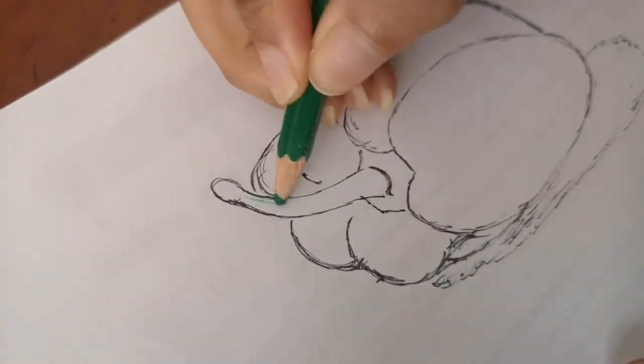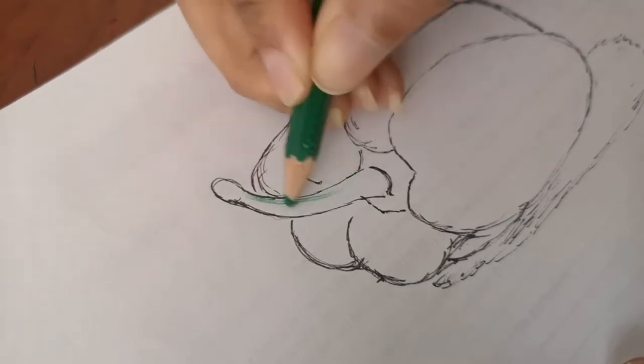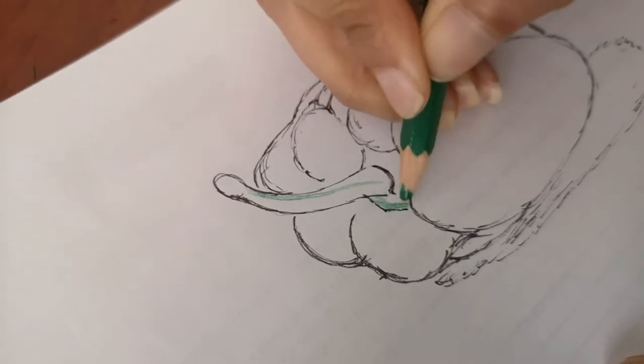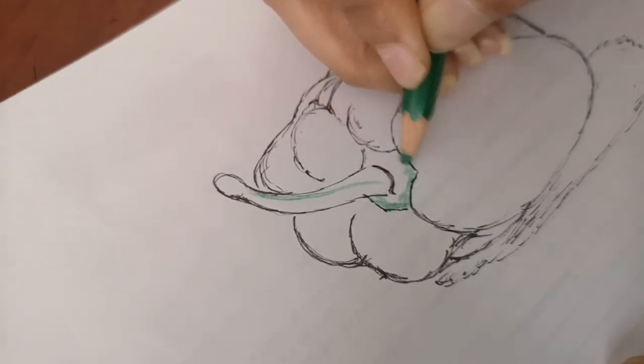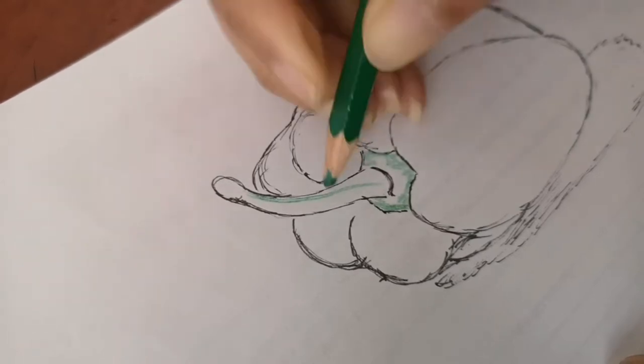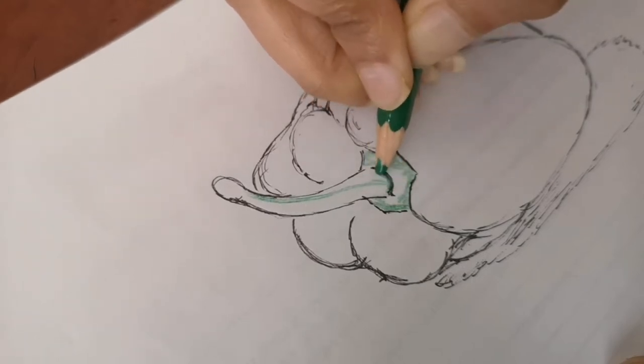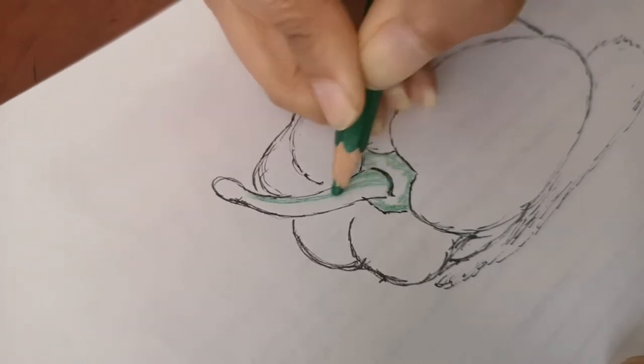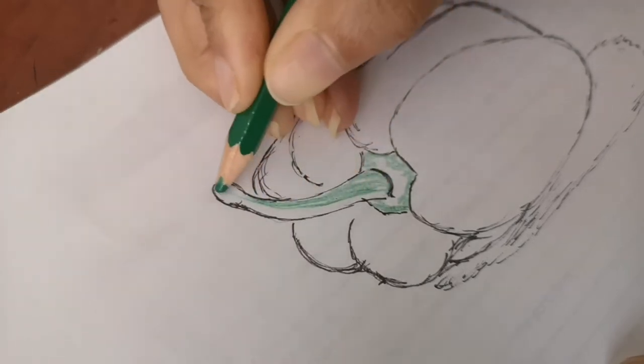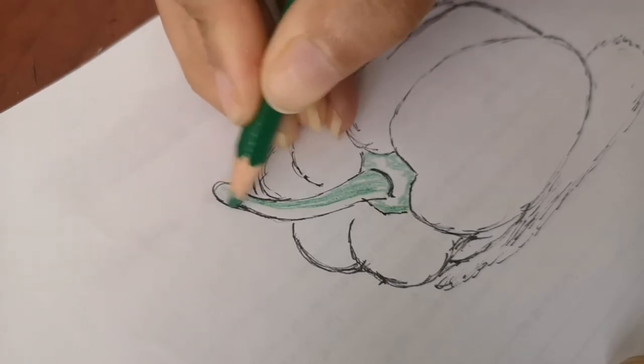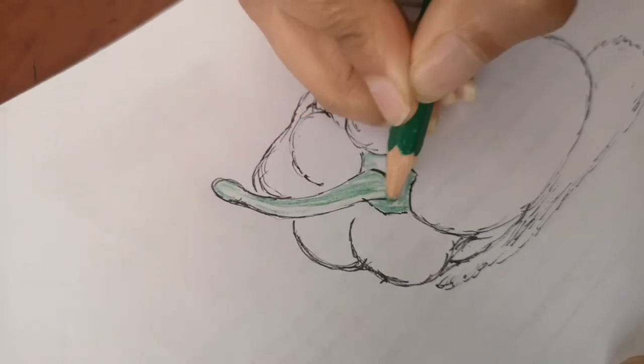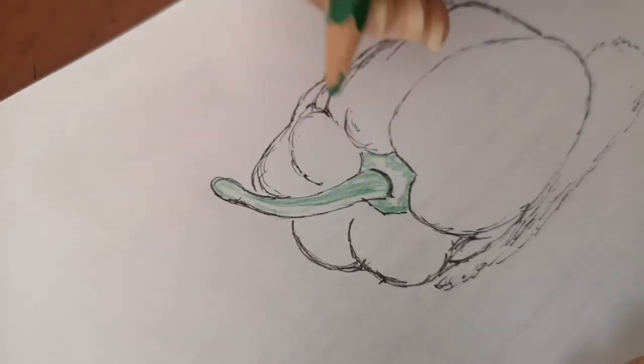I started off the coloring with the stem area. You will see that I'm using different colors of green, and I'm not coloring the whole thing with the same color. I'm going to leave a little bit of white as well so it looks like it's shining. I'm going to use lighter green and a little bit of black for this area.